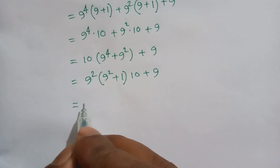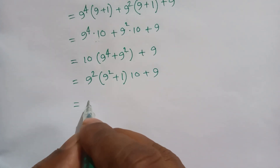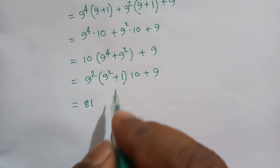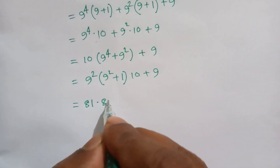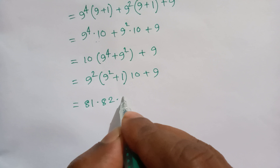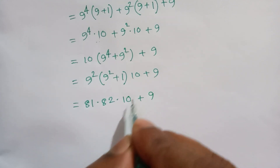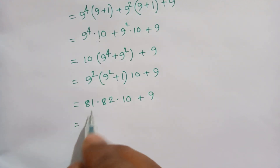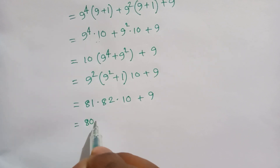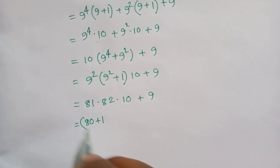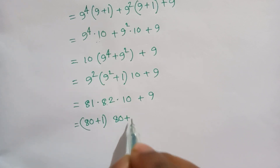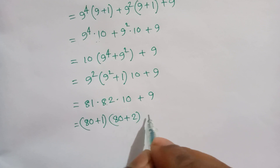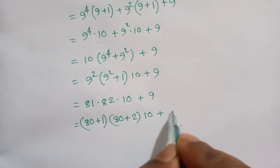So 9 squared is 81, and 81 plus 1 is 82. We can write 81 as (80 + 1) and 82 as (80 + 2). So the expression becomes (80 + 1) times (80 + 2) times 10, plus 9.